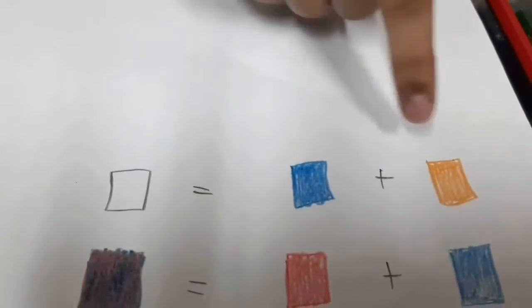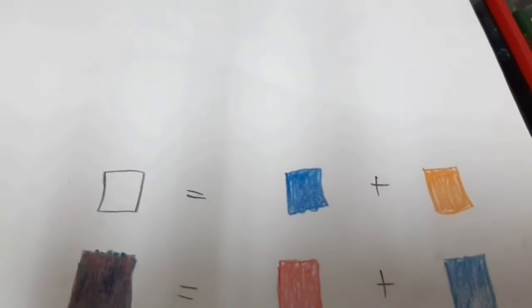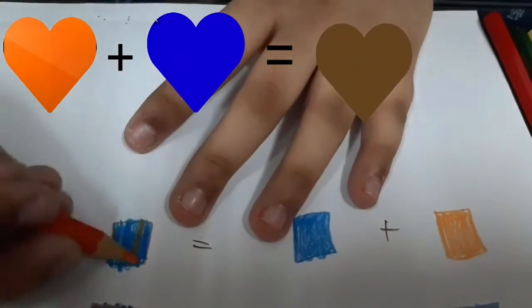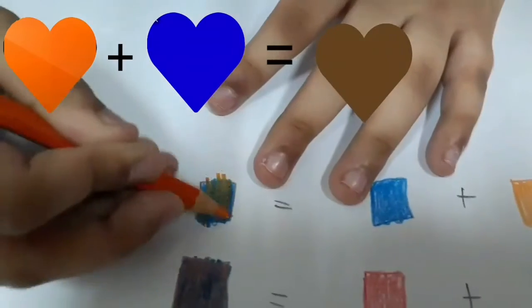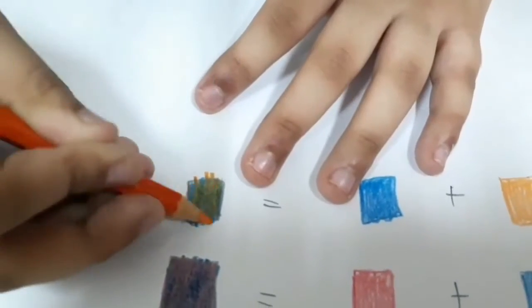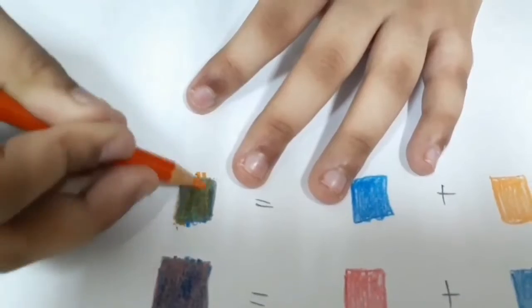So friends, orange and blue mix together to make brown. See? See brown. Let's see.